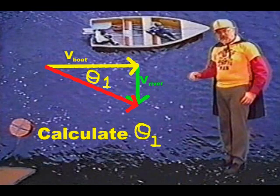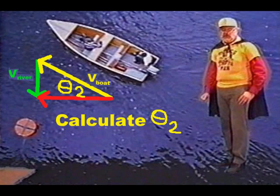Now to find the direction that the boat actually travels when aimed straight across, you want to use the tangent function. The speed of the river divided by the speed of the boat will give you angle theta1. To find the angle at which the boat must be aimed upstream in order to counterbalance the current, you have to use the sine function — divide the speed of the river, the green vector, by the speed of the boat, the hypotenuse.